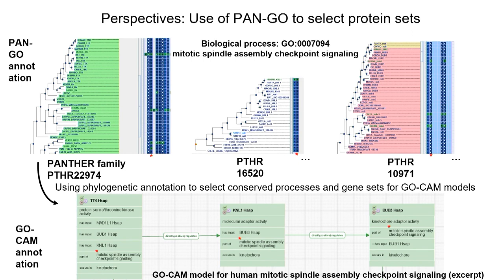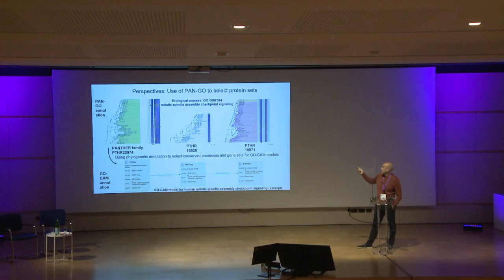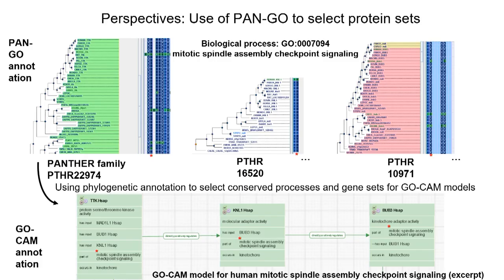PanGo is a tool developed by the GO Consortium for GO annotation with the help of phylogenetic trees. If you look at a specific biological process in the tree, it gives a more selective annotation. Mark Feuermann on Wednesday will talk more about PanGo, so I won't go into detail. From this tree and its annotations, we select the human counterpart proteins for a specific process and do the GoCam. It's a way to select proteins for pathway curation.